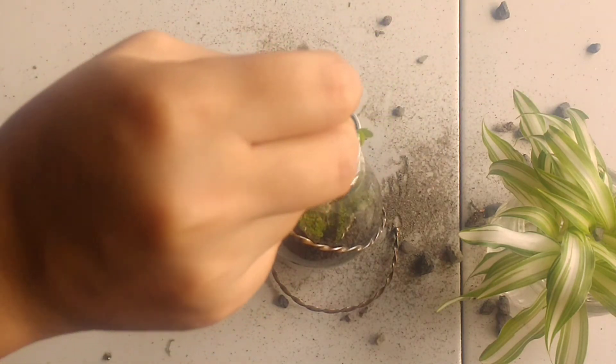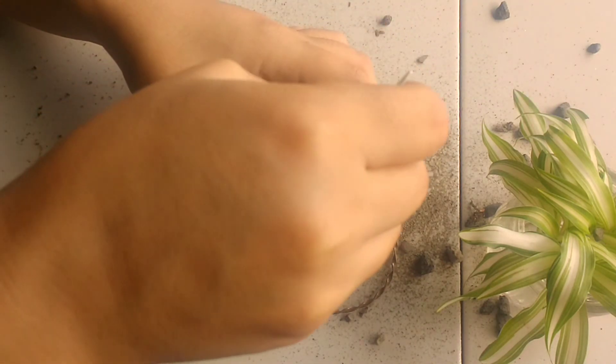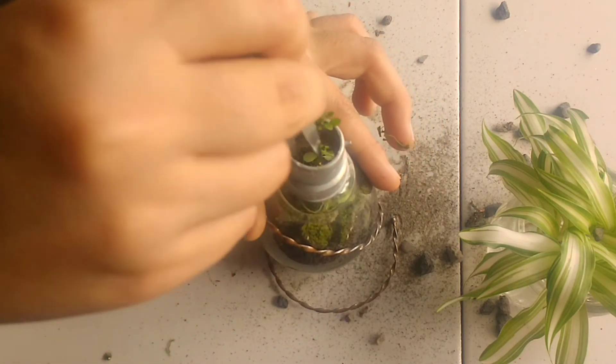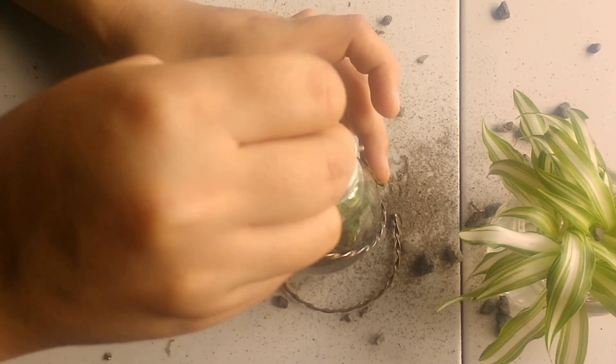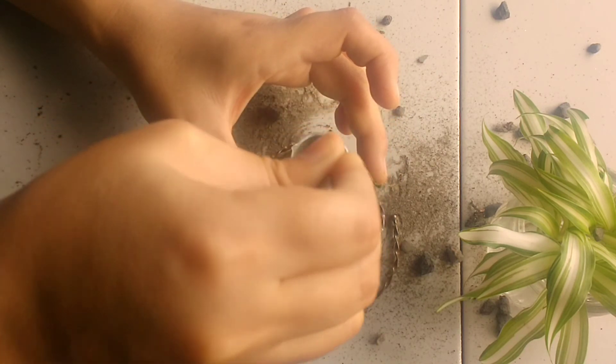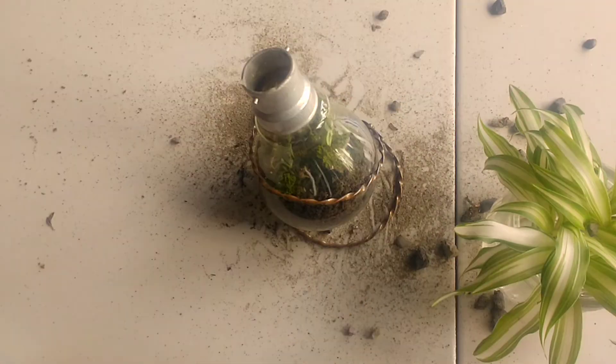Now choose the plant according to the size of the terrarium and keep in mind the plant's light and moisture needs. Use moisture-loving plants for a closed terrarium as it has its own water cycle.